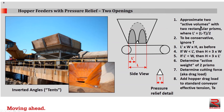We can approximate two active volumes with two rectangular prisms, where L prime equals L minus T — the width of the inverted angle — divided by 2. To be conservative, we ignore T. To calculate volume, we multiply L prime times W times H as before. If W is smaller than L prime, then H equals 3 times the width; if L prime is smaller than the width, then H equals 3 times L prime. We determine the active weight of two prisms, then determine the cutting force — the drag load — by applying the factor of 0.5, and add the hopper drag load to the standard conveyor effective tension TE.